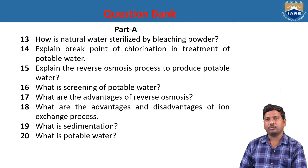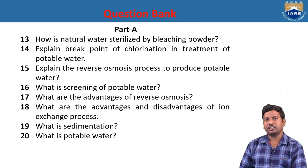Screening of potable water means water flows through large screens and removes leaves and other waste material. The advantages of reverse osmosis: it removes both ionizable and non-ionizable particles, and even silica is also removed. The disadvantage of the ion exchange process is that it is a cost-effective process.